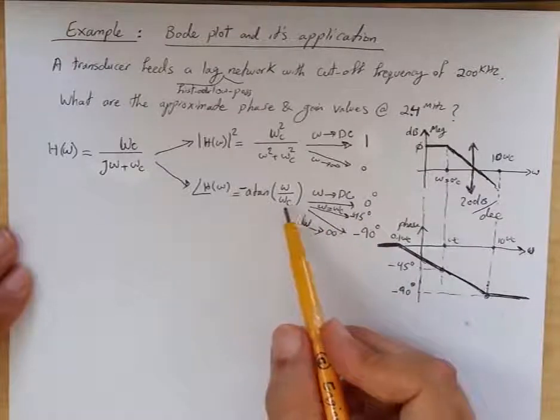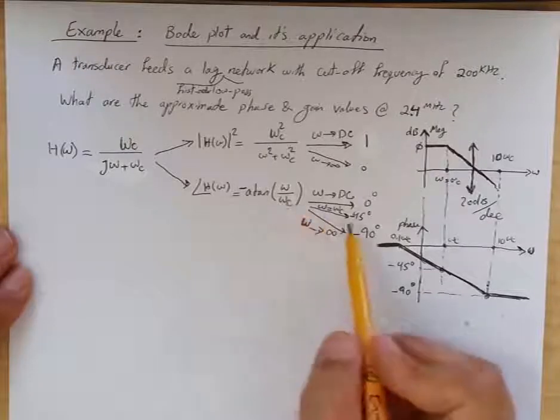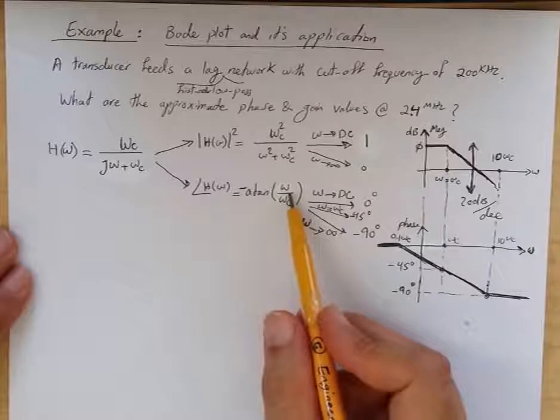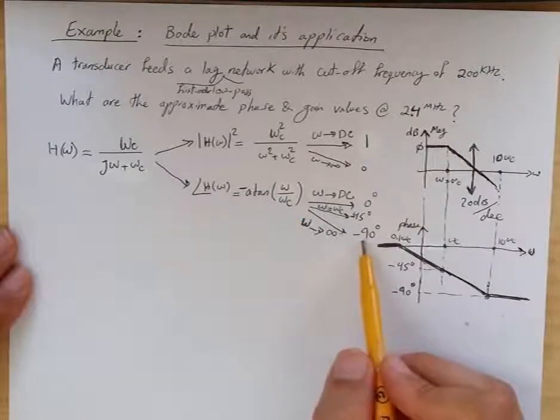this is arctan of 1, which is minus 45 degrees. When ω goes to infinity for super high frequency, we approach minus 90 degrees.